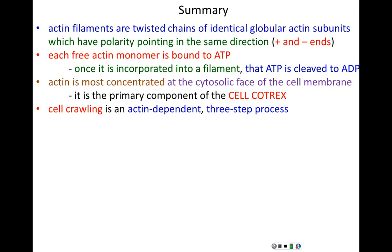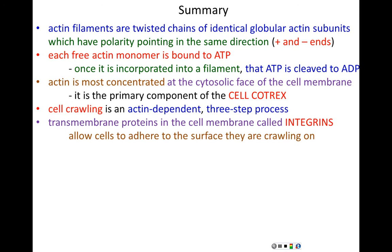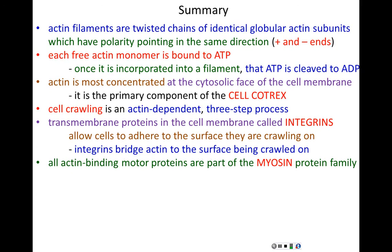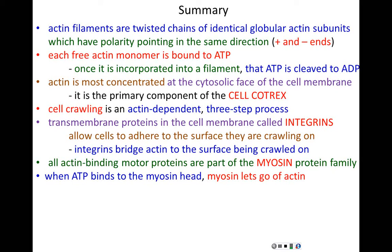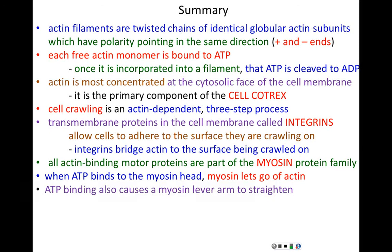Once lamellipodia and filopodia have been sent out actin-based to probe the environment, those structures must adhere to the crawling surface via integrins — transmembrane proteins which bridge actin filaments within the cell to the crawling surface. This is the anchoring portion of cell crawling. Then using myosin to drive cell movement in an actin-dependent way, the whole cell flows forward to those adhesion points — that is how cells crawl. We continued talking about myosin: when ATP binds to a myosin head, that's a release signal — myosin lets go of actin. ATP binding also causes the myosin lever arm to re-straighten and recycle back to its original position.